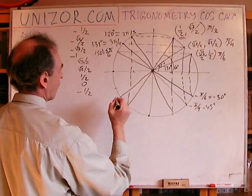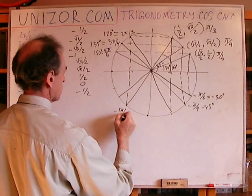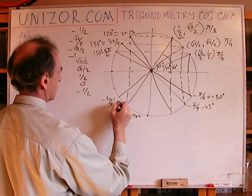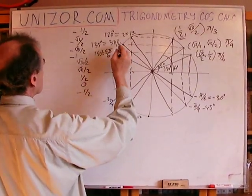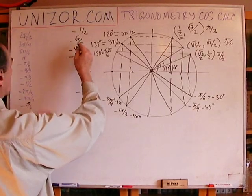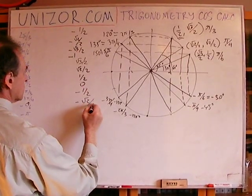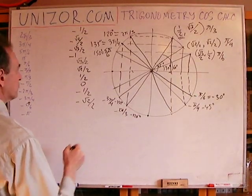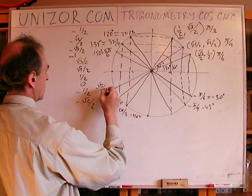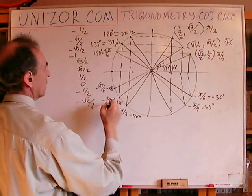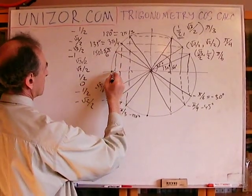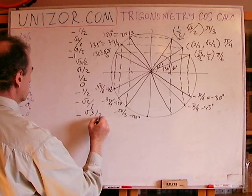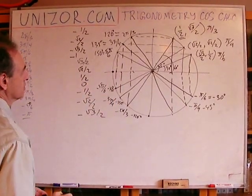−2π/3 is −120 degrees, symmetrical to 2π/3, so its abscissa is exactly the same: −1/2. −3π/4 is −135 degrees, symmetrical to 3π/4, which has −√2/2, so it's the same here: −√2/2. −5π/6 is −150 degrees, symmetrical to 5π/6, so the abscissa is −√3/2. Finally, −π has abscissa −1.